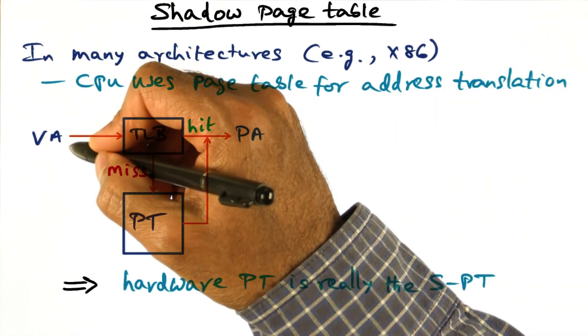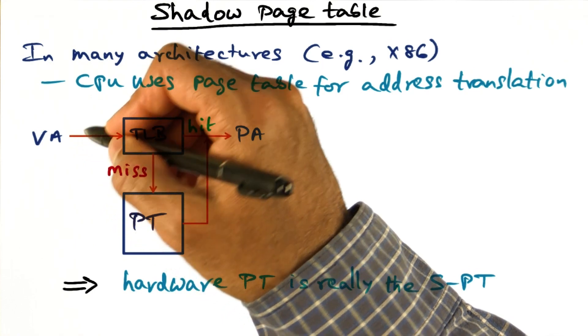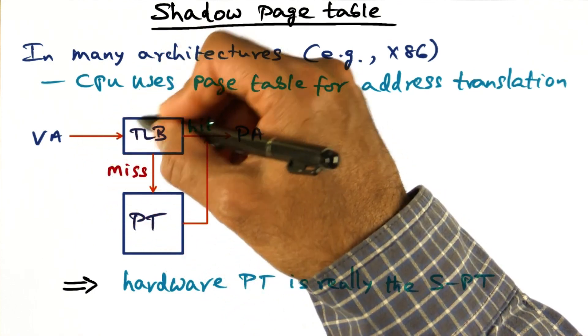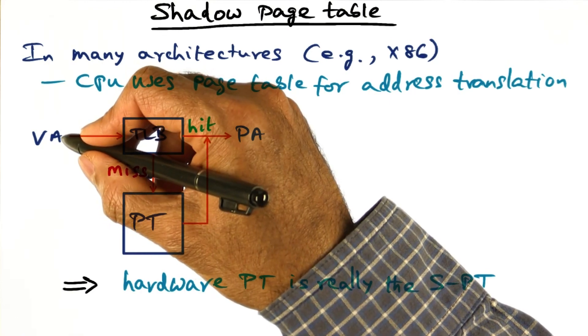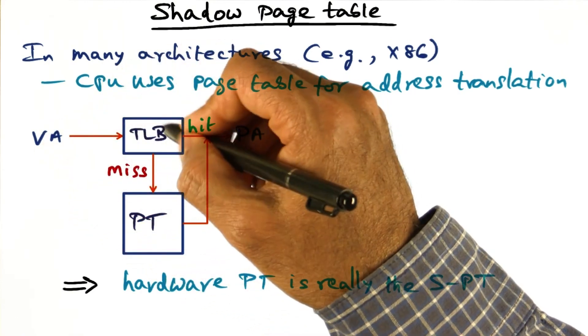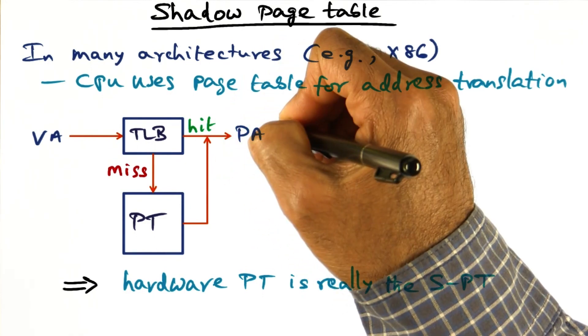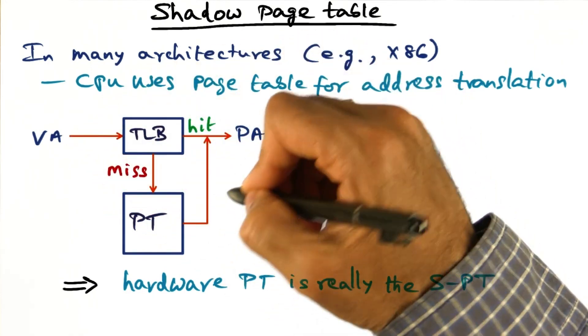What that means is, presented with a virtual address, the CPU gets to work. It first looks up the TLB to see if there is a match for the virtual page number contained in this virtual address. If there is a match, it's a hit, and it can translate this virtual address to a physical address.